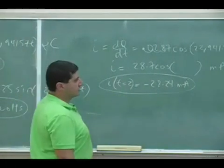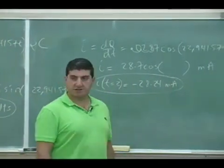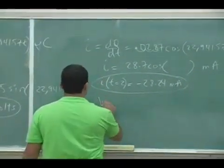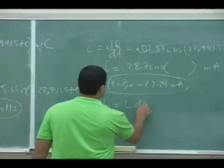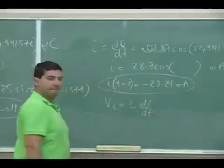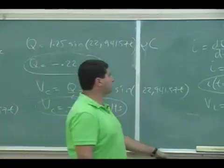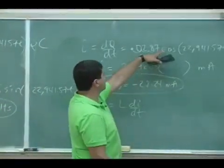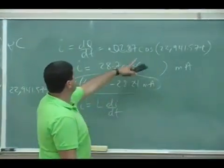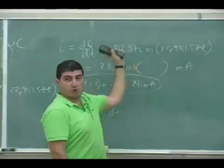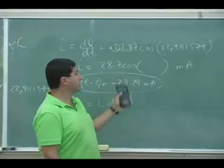Okay, then when we want to know the VL, the voltage across the inductor, then VL is going to equal L di/dt. So that's like the equivalent of the acceleration. So you take the derivative of this again. The 22,000 comes out one more time, so that's going to be a pretty big number now.